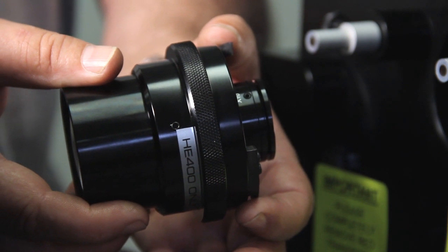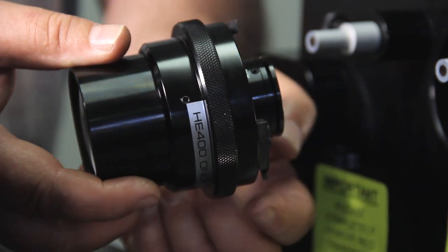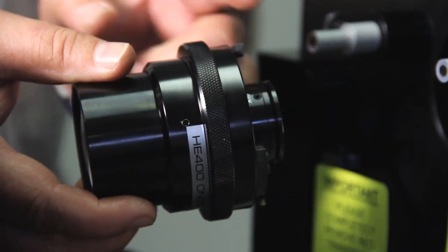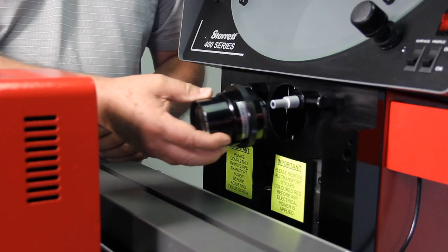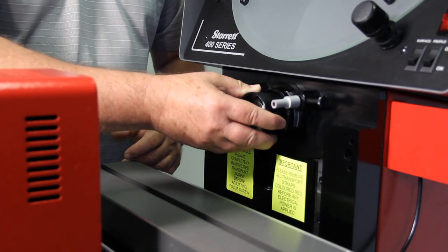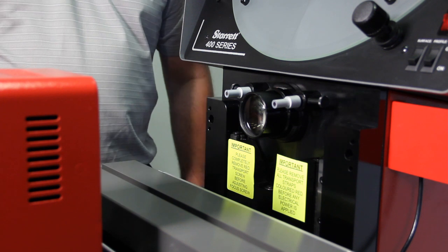Time to install the lens. If you notice, it has rotating bayonet mounts. If you rotate the bayonet mounts horizontally, put it in the machine, rotate it vertically, it locks into the machine.